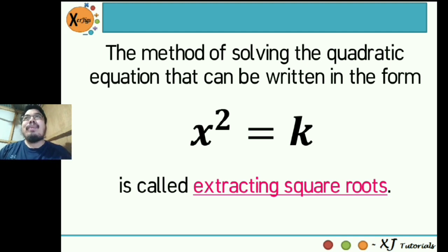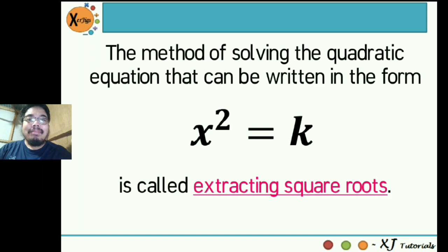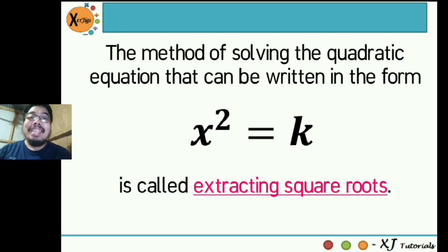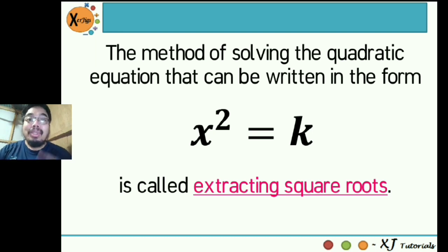What is something that you observed about this equation? Is there any term that is actually lacking? That is your linear term or your bx. So that is why if you encounter quadratic equations with no linear term, you can actually solve that quadratic equation by extracting square roots. Please remember that. Furthermore, there are actually three properties that we need to remember.